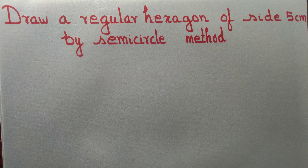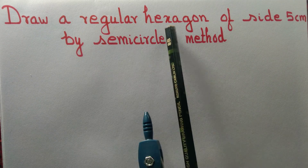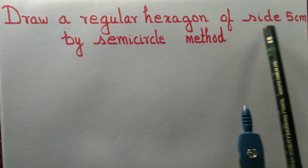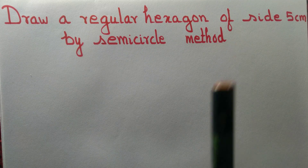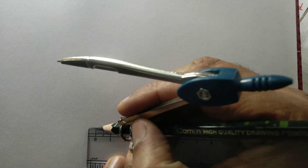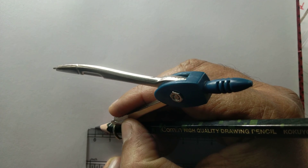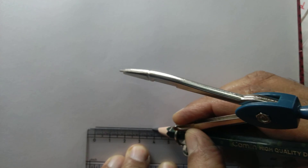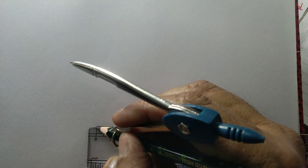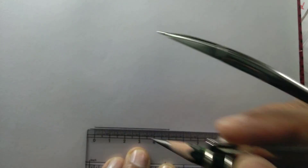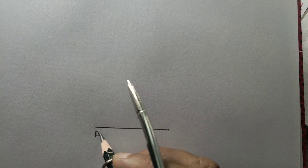Let us draw a regular hexagon of side 5 centimeter by using the semicircle method. First step, we draw a line segment that measures 5 centimeter, 0 to 5. Let A, B be the line segment that measures 5 centimeter.